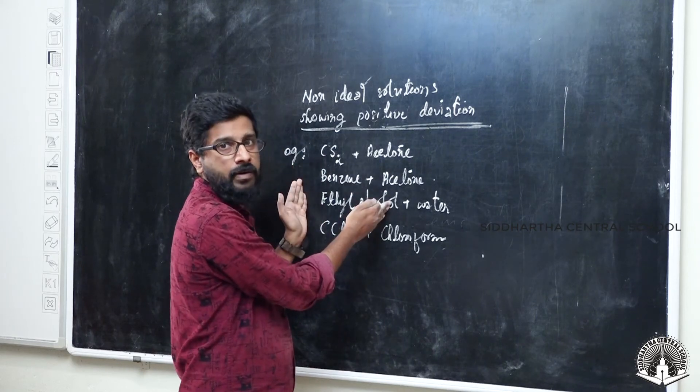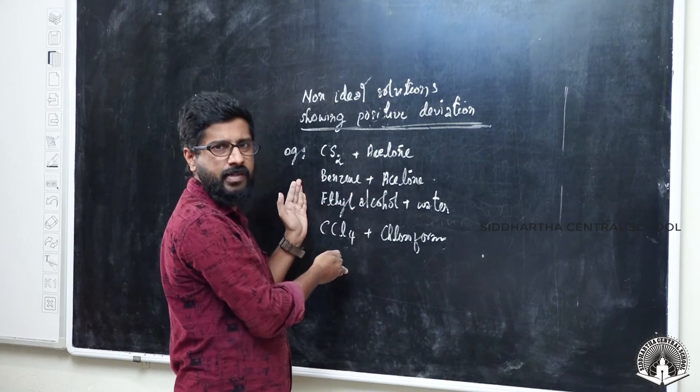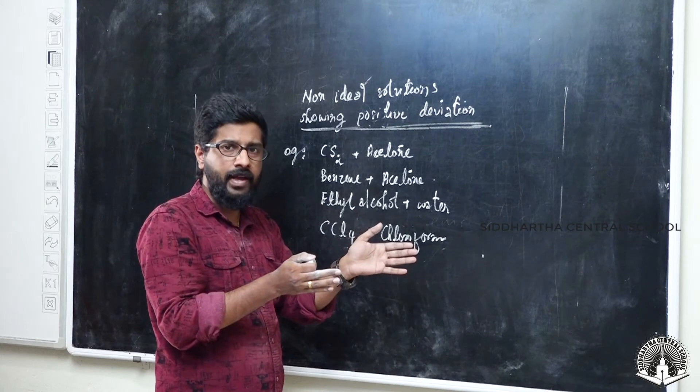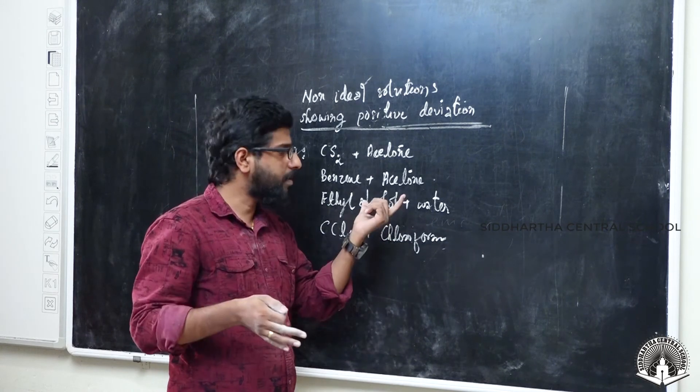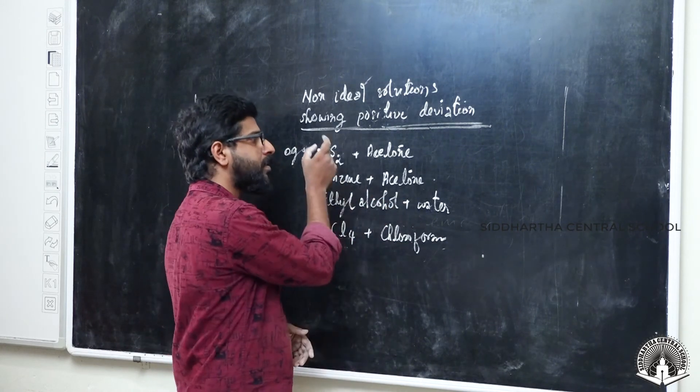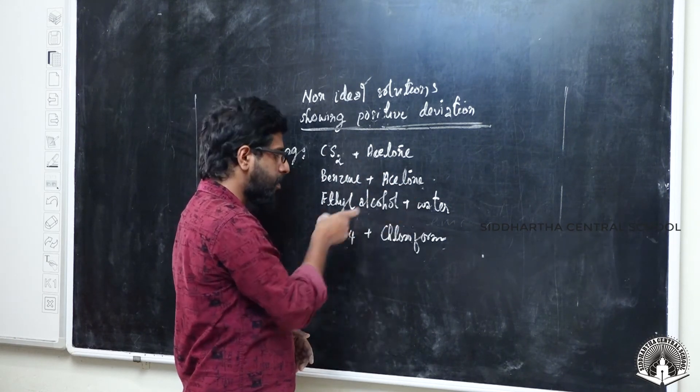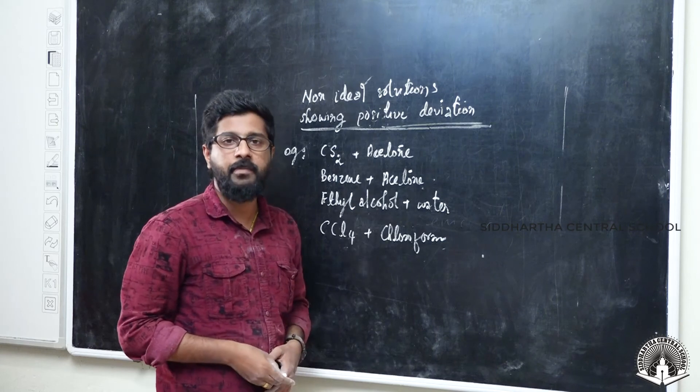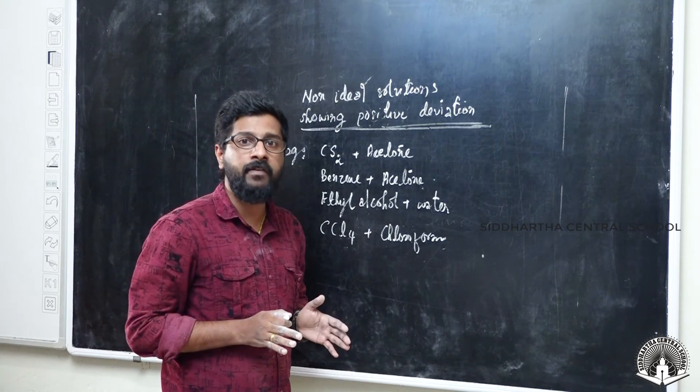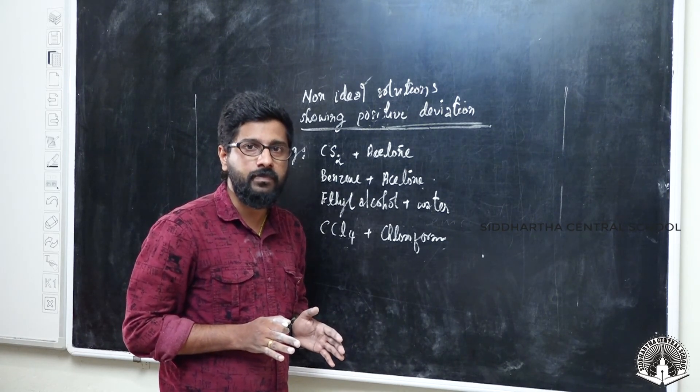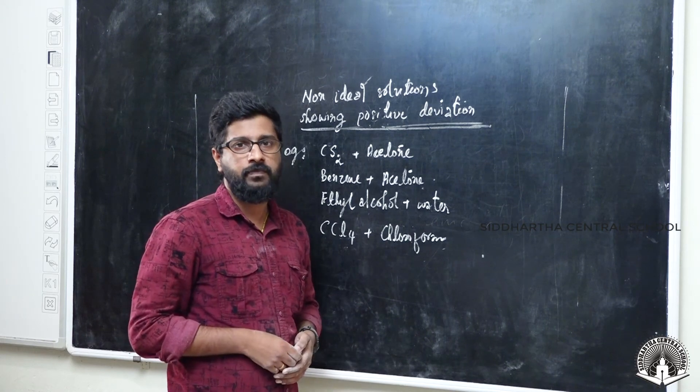The examples should be memorized. Once again, examples are CS2 acetone, benzene acetone, ethyl alcohol and water, CCL4 and chloroform. These are the examples of non-ideal solutions showing positive deviation. Is that clear?